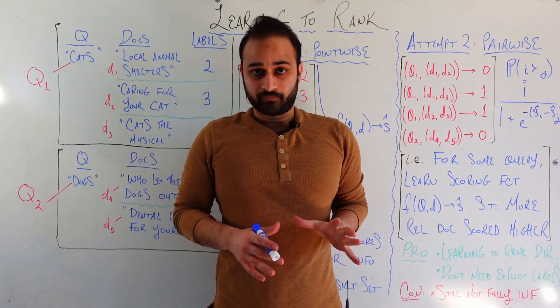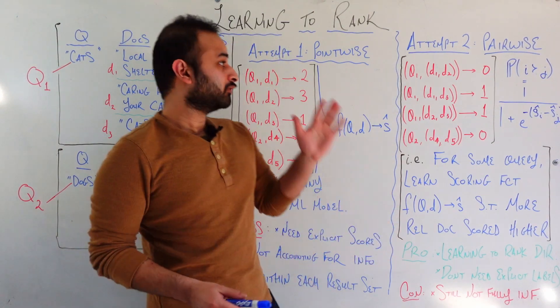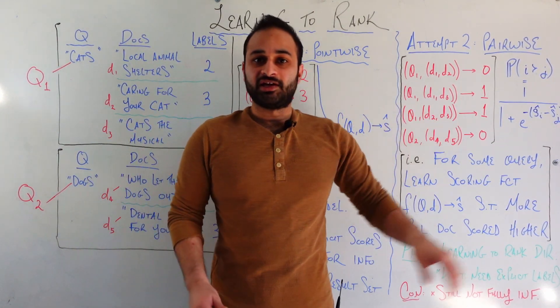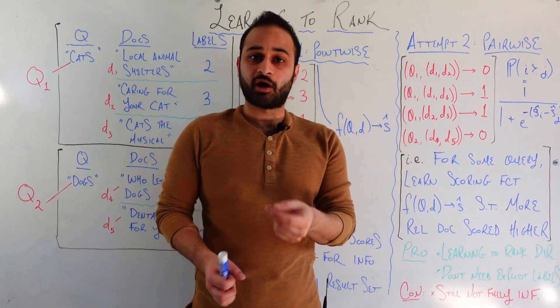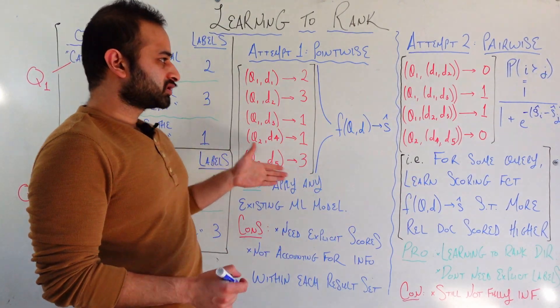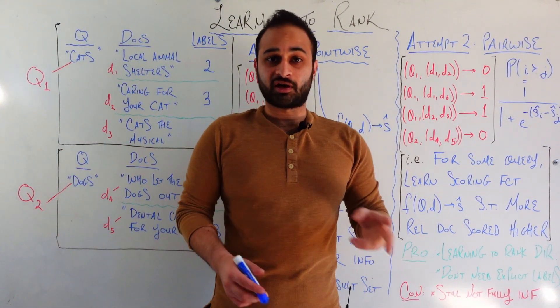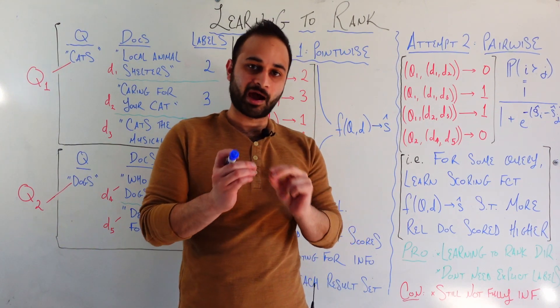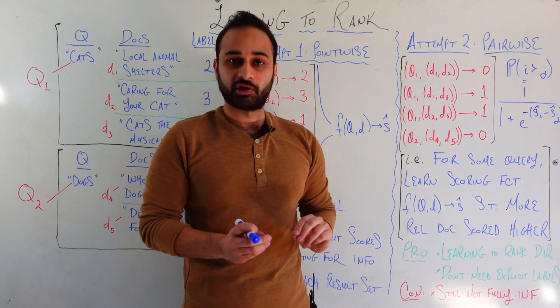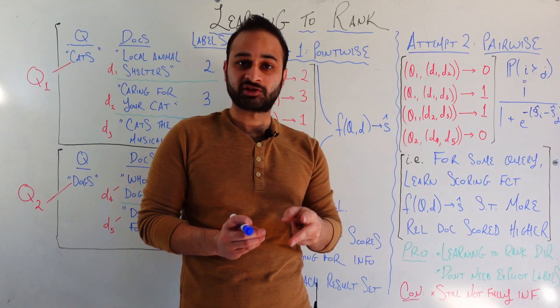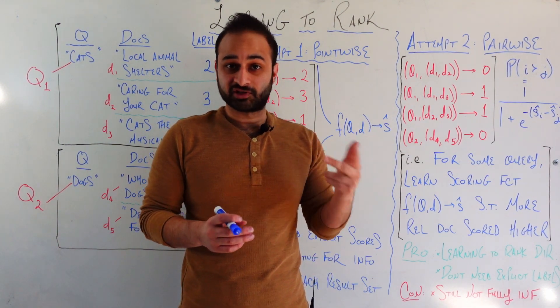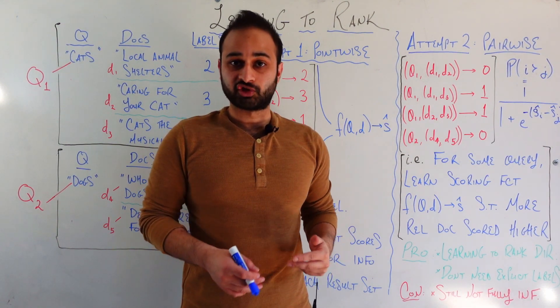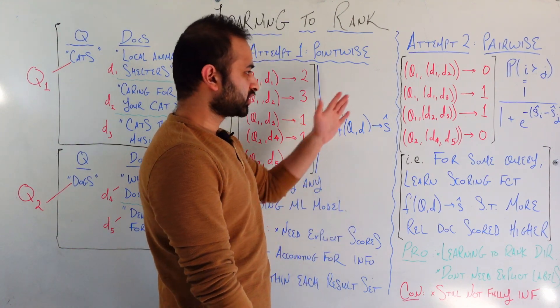So the fundamental difference of going from point-wise to pair-wise is that first we're framing our training data not as just independent samples, but as pairs of things that are within the same query. So we're inherently starting to take into account these very interesting relationships between pairs of documents and specifically their relevances versus each other for each query.